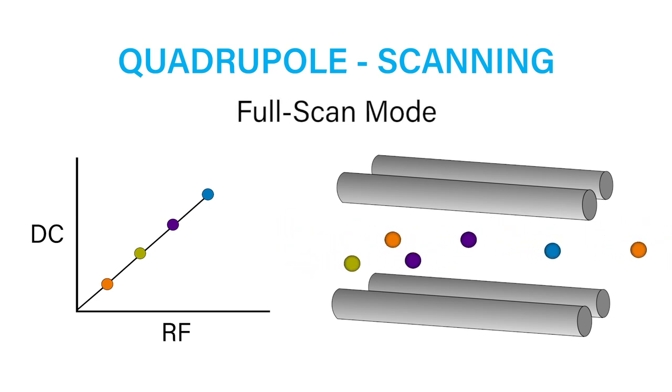This mode provides the most information about all the ions in your sample. However, it is not as sensitive as Selected Ion Monitoring, because the quadrupole transmits each mass-to-charge ratio for only a small percentage of the total scan time.